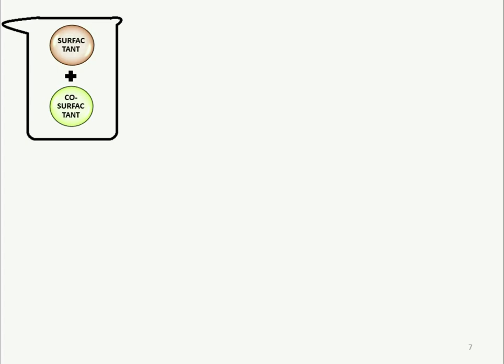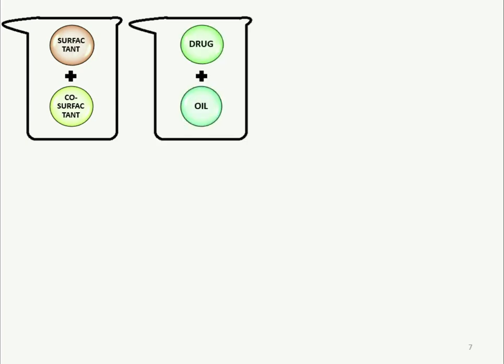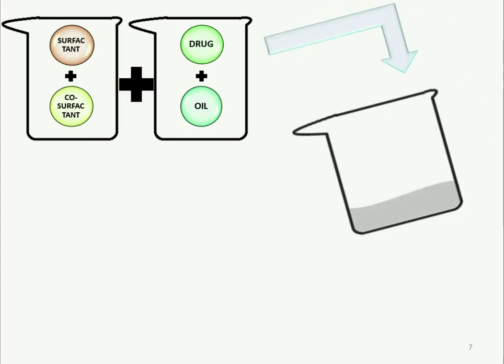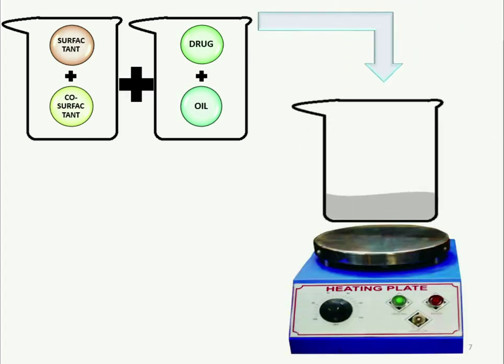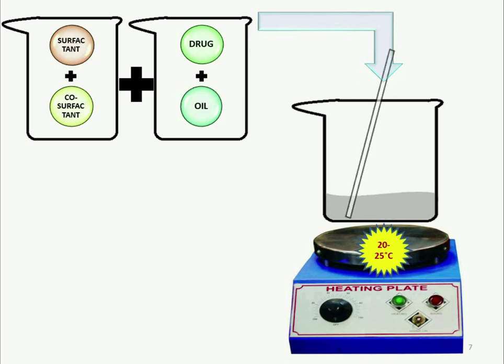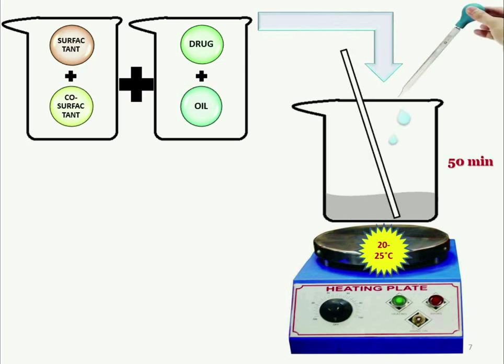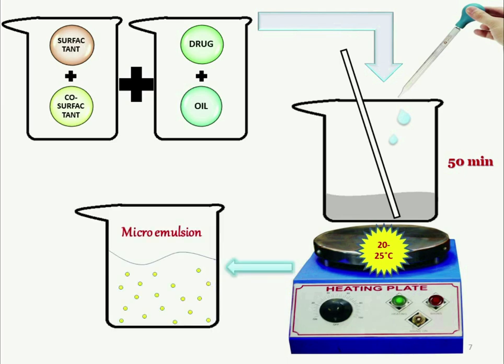For the method of preparation, first take a beaker containing surfactant and co-surfactant and mix them properly in sufficient amounts. Take another beaker containing drug and oil and mix them together. Then both beakers are combined into a single beaker, maintaining a temperature of 20 to 25 degrees centigrade on a heating plate with a little agitation, and add a few droplets of water to dilute it. After approximately 50 minutes, the micro emulsion forms.